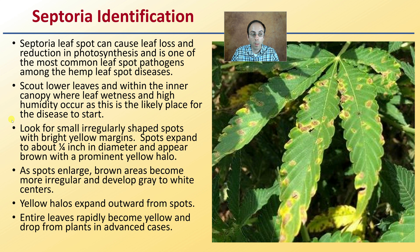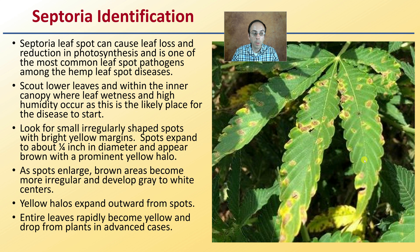Look for small irregular shaped spots with bright yellow margins. Spots expand to about a quarter inch in diameter and appear brown with a predominant yellow halo, which is clearly evident in the images shown. As spots enlarge, brown areas become more regular and develop gray to white centers. Yellow halos expand outwards, and in advanced cases the entire leaf rapidly becomes yellow and can drop from the plant.